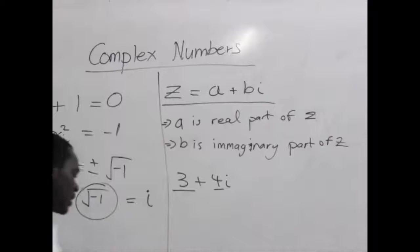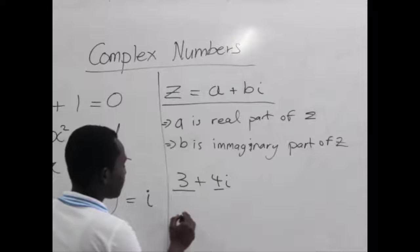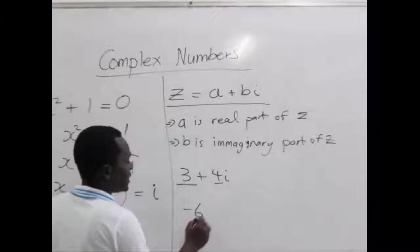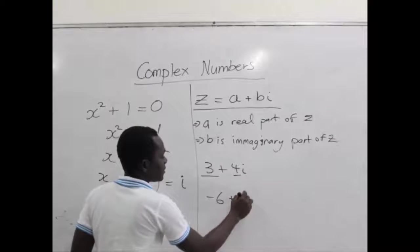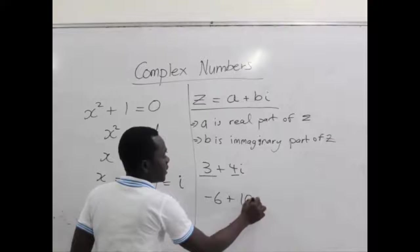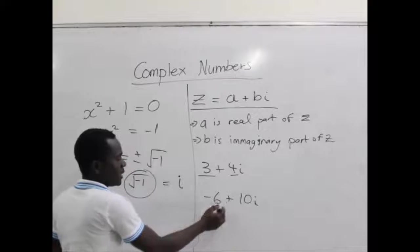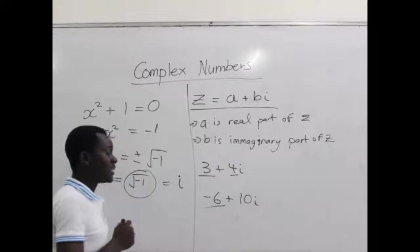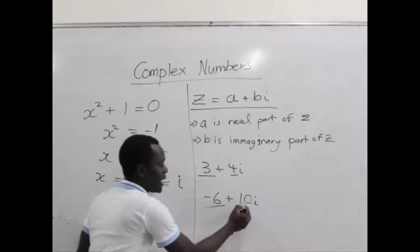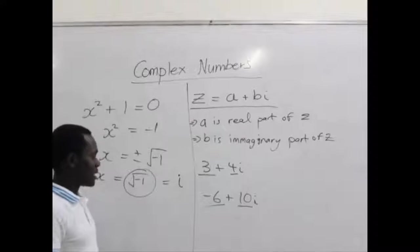Another example we can talk of is -6 + 10i. Negative 6 becomes the real part and the 10 becomes the imaginary part.